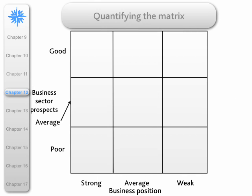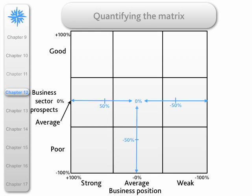We can take a matrix similar to the PMP, except we've put it into nine squares rather than four. We put a score going from minus 100 to plus 100 to work out the business position — the blue arrows show the centre is zero, positive on the left and negative on the right. Similarly, we put scores for business sector prospects, positive for the top half and negative for the bottom half. We then insert the position of minus 46.1 and 34.8, and include a circle whose area is proportional to annual sales, as in the product market portfolio. Product A has a weak business position but is in quite a good market.